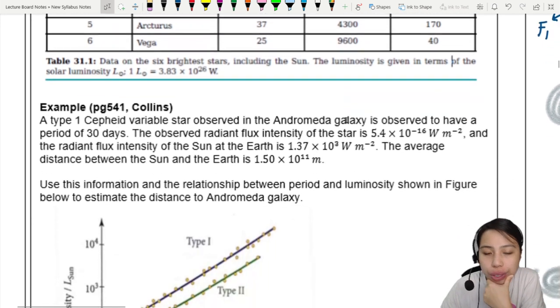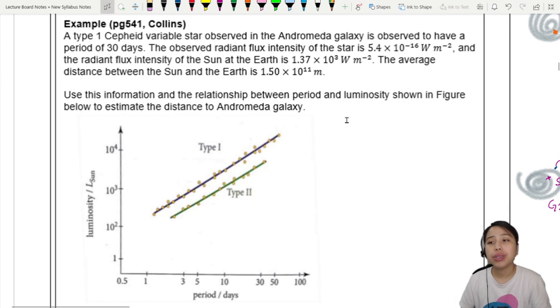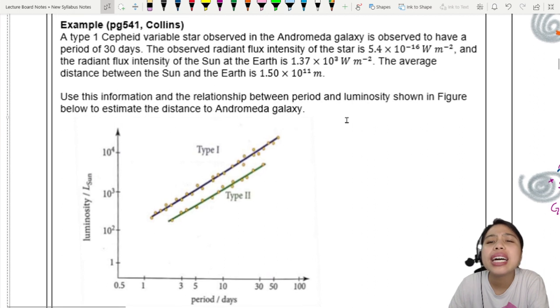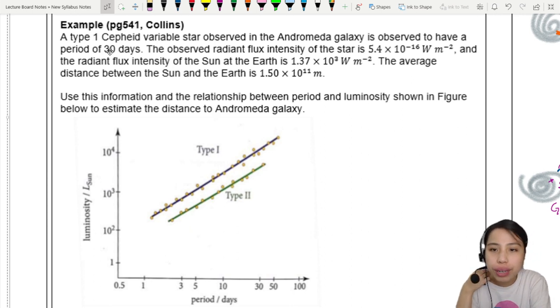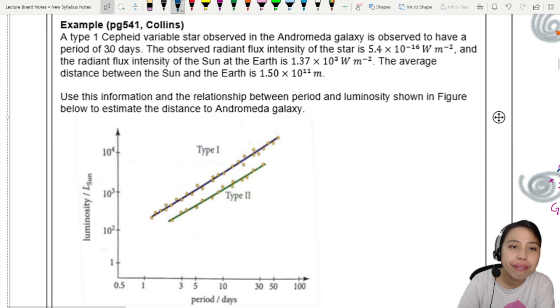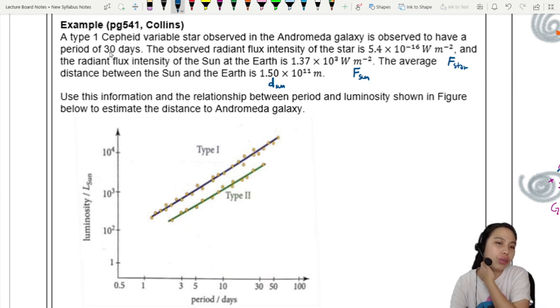Before we end this video, we're going to try one quick example of how we can use a period-luminosity chart to estimate the distance to a star. A type 1 Cepheid variable star observed in the Andromeda galaxy far far away has a period of 30 days. The observed radiant flux intensity of the star is 5.4×10⁻¹⁶, that's our F. The radiant flux intensity of the sun at Earth is F_sun, and average distance between sun and Earth is d_sun. Use this information to determine the distance to the Andromeda galaxy.